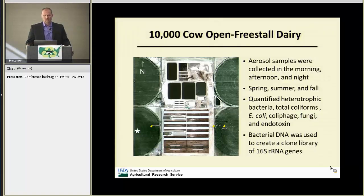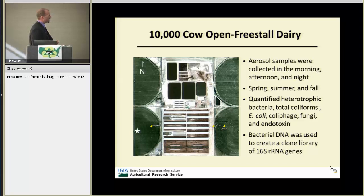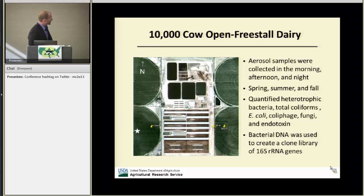This is a picture of the 10,000-head open freestall dairy. While we're doing gas emission work, we're also doing bioaerosol work at the same location. During the course of the year — in spring, summer, and fall — we collected samples in the morning, afternoon, and night. This shows the downwind sample locations. The wind is typically from the west, so we have an upwind site 200 meters upwind, and downwind sites at 50 and 200 meters.